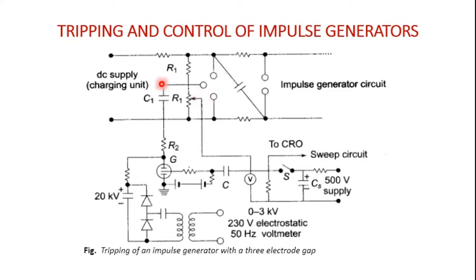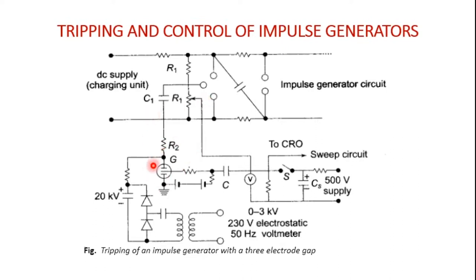The generator is fitted with a DC supply charging unit having a three electrode gap arrangement. The third electrode is kept between the top and the bottom electrode, and with the help of resistances R1, a certain potential is maintained between the top and bottom electrodes. When a tripping signal is initiated by a pulse from the thyratron by closing switch S, conduction begins.